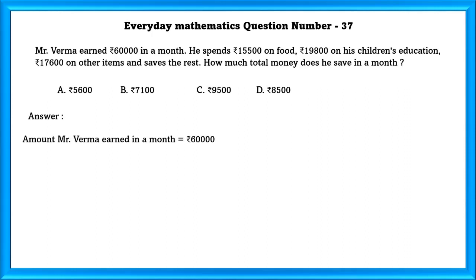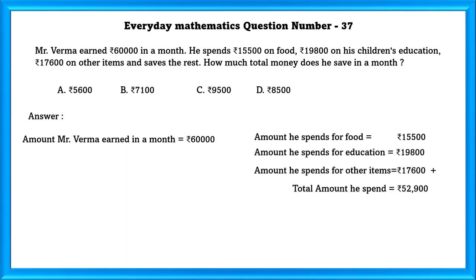Mr. Verma earned 60,000 rupees. He spends for food, education and other items. Adding that we will get 52,900 rupees. Subtracting that from the total, we will get 7,100 rupees he saved.